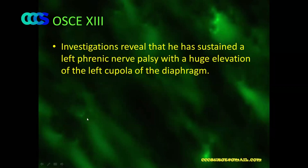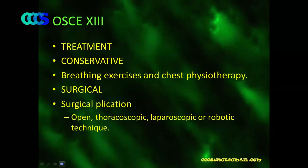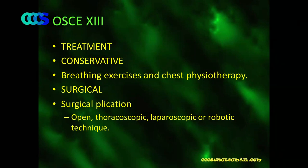The patient sustained a left phrenic nerve palsy with a huge elevation of the left cupola of the diaphragm. Treatment is conservative — most patients, given their age, are managed conservatively with breathing exercises and chest physiotherapy. However, if dyspnea is quite serious, surgical plication of the left cupola of the diaphragm is required, using non-absorbable suture material. This can be done open, thoracoscopically, laparoscopically, or even robotically.